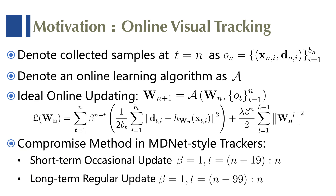Some MDNet-style trackers use two update strategies to make a compromise between memory retention and tracking speed, while updating with mini-batch SGD.